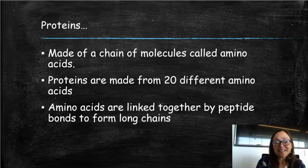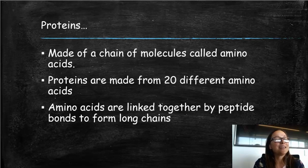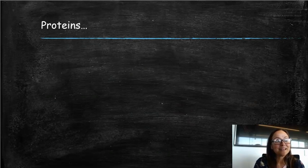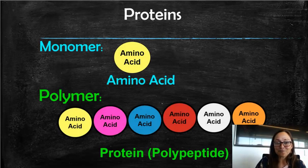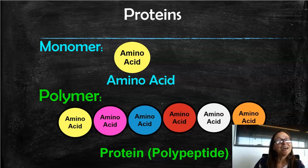And these amino acids are linked together by what's called peptide bonds. And that's where you get the name polypeptide. So to summarize, the monomer of proteins are amino acids, and the polymer of proteins is a polypeptide.